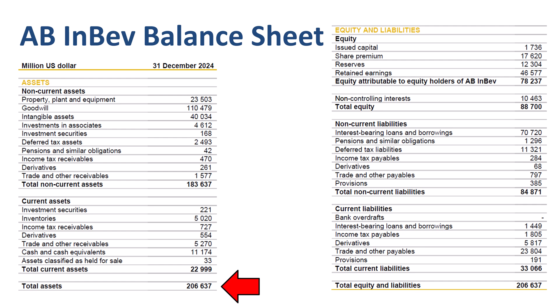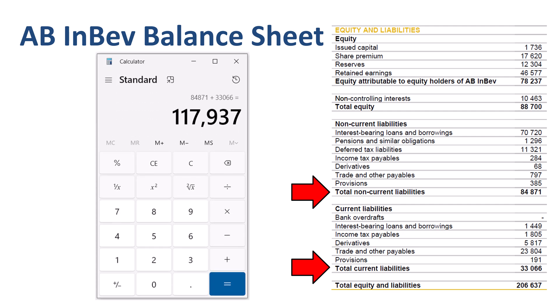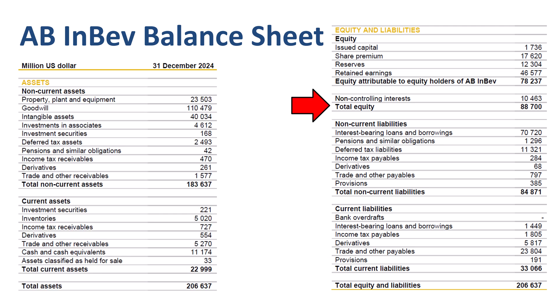Total assets, on the bottom left, are $206.6 billion. The total liabilities number — what is owed to third parties — is not explicitly stated; we need to calculate it by adding non-current liabilities and current liabilities: $84.9 billion plus $33 billion equals $117.9 billion. Total equity, what is owed to shareholders, is $88.7 billion.